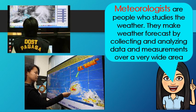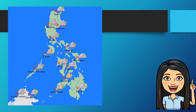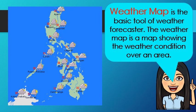Meteorologists are people who study the weather. They make weather forecasts by collecting and analyzing data and measurements over a very wide area. This is called a weather map — the basic tool of a weather forecaster. A weather map shows the weather conditions over an area. PAGASA analyzes a weather map before it provides weather forecasts and flood and typhoon warnings to the public.